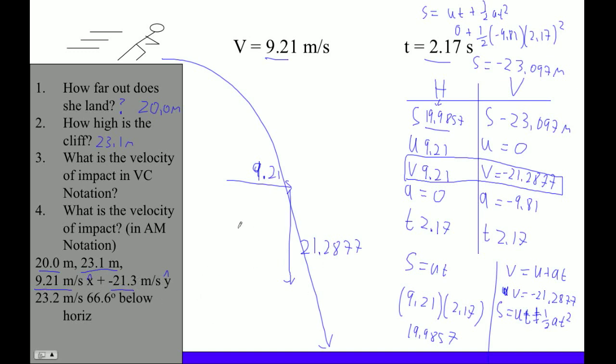And then to figure out the angle and magnitude now, we have to find this angle right there. And that angle right there is tan inverse of opposite over adjacent, so 21.2877 over 9.21. So inverse tan of 21.2877 divided by 9.21, and I'm in radians... okay, degrees, enter here, second entry. And this ends up being 66.6 degrees. Coincidence? I think not. Okay, that's the angle there, 66.6 degrees.